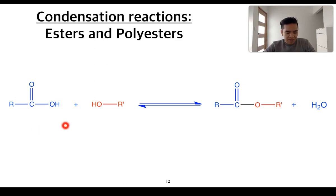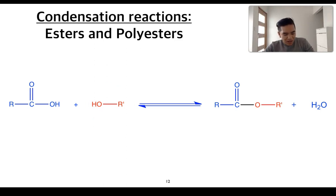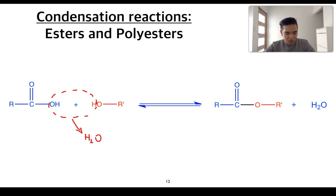An important condensation reaction is the formation of esters and polyesters. On the left we have a carboxylic acid with its carboxyl functional group, which can react with an alcohol with its hydroxyl functional group. When these react together, they release water as a small molecule, and the result is the carbon bonding to the oxygen from the alcohol — these atoms together form your ester functional group, while water is released.